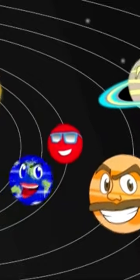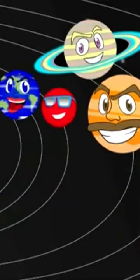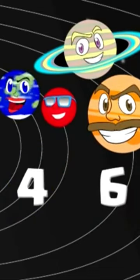There are 8 planets, spinning round the sun, 2, 4, 6, 8 planets, let's count them one by one!